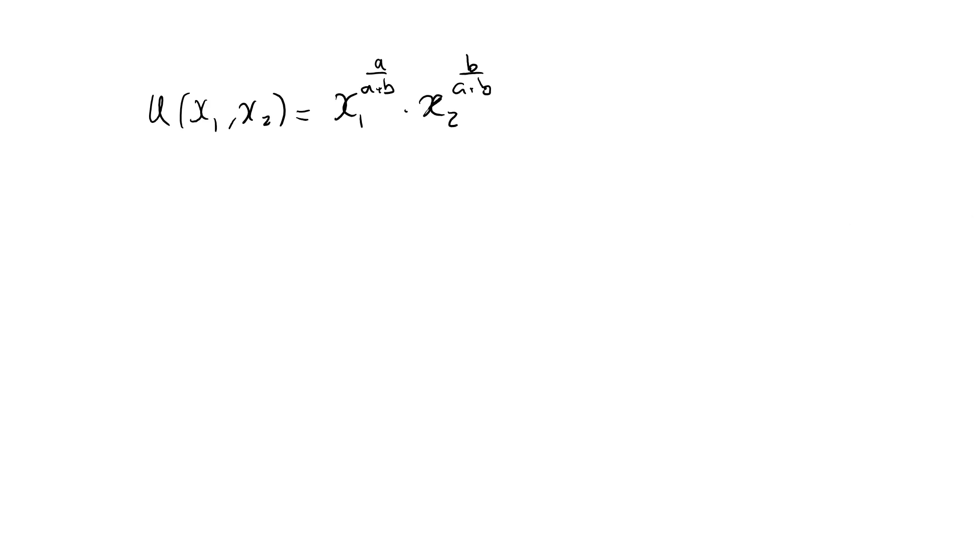We can also conclude that Cobb-Douglas preferences are homothetic. Cobb-Douglas preferences can be represented by a normalized Cobb-Douglas utility function like this one. All we have to do is to show that this function is indeed homogeneous of degree one.